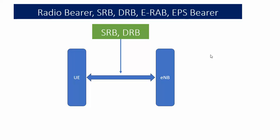This established connection is called a radio bearer, and it is established between the UE and eNodeB. Radio bearer is of two types: SRB and DRB. SRB is used for signaling purposes — when the eNodeB wants to send an RRC connection request, RRC connection reestablishment, or any signaling or NAS messages, that is when SRB — Signaling Radio Bearer — is used.